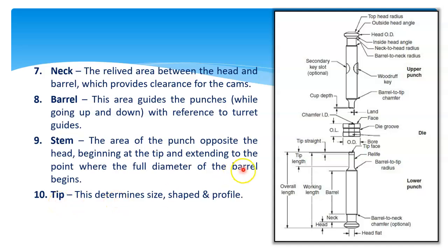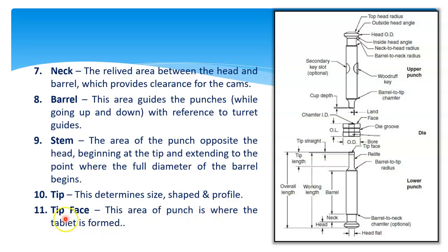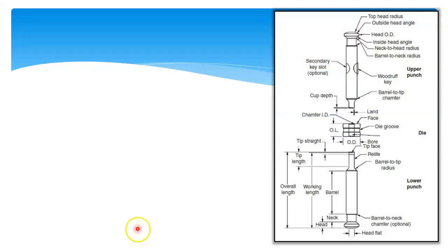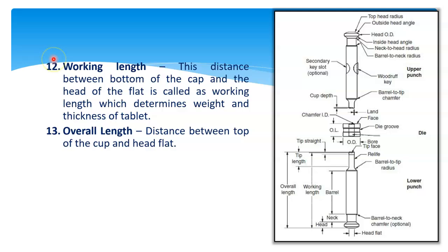Then tip — this is the tip of the punch, which determines the size, shape, and profile of the tablet. Then tip face — this is the tip face; this area of the punch is where the tablet is formed. Then working length — the distance between the bottom of the cap and the head flat is called working length, which determines the weight and thickness of the tablet.